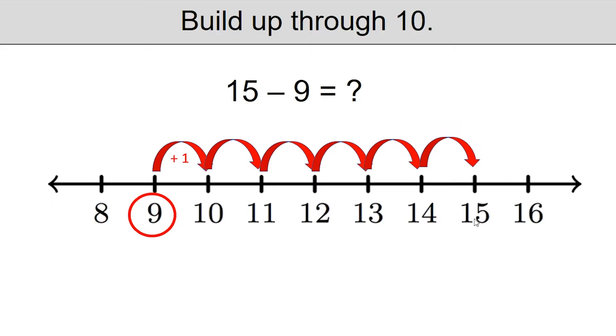Now you can see I have reached 15, which means the distance from 9 to 15 is going to be 1, 2, 3, 4, 5, 6. Or you can think 15 minus 9 is equal to 6.